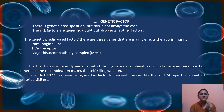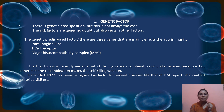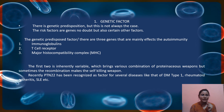The major histocompatibility complex, MHC, will be seen in more detail later. Recently, it has been found that PTPN22 — a protein and a factor — is responsible for several autoimmune diseases including type 1 diabetes mellitus, rheumatoid arthritis, and SLE, etc.